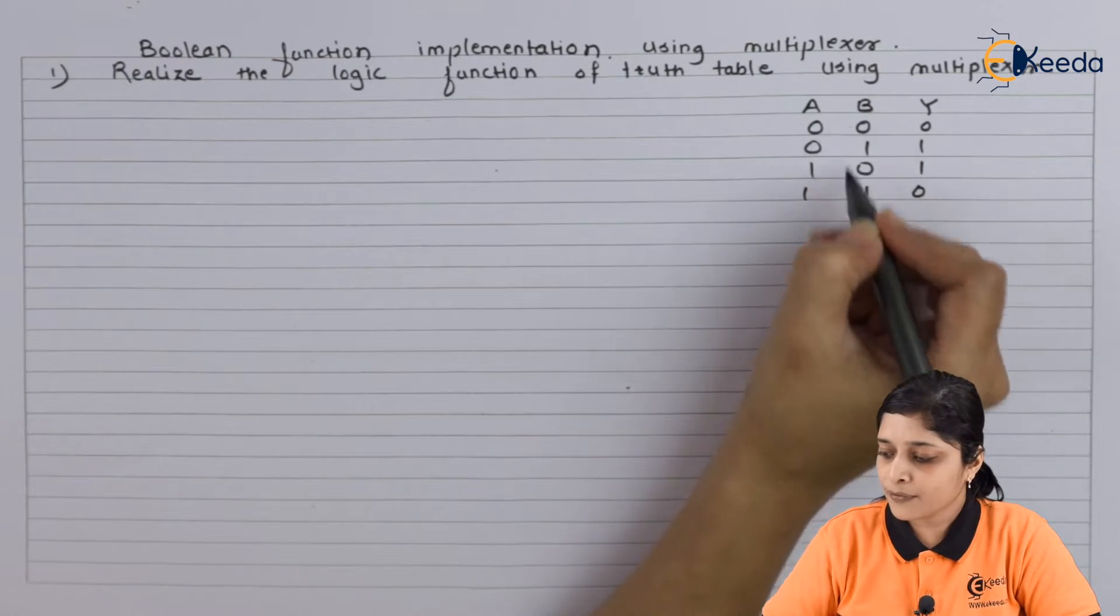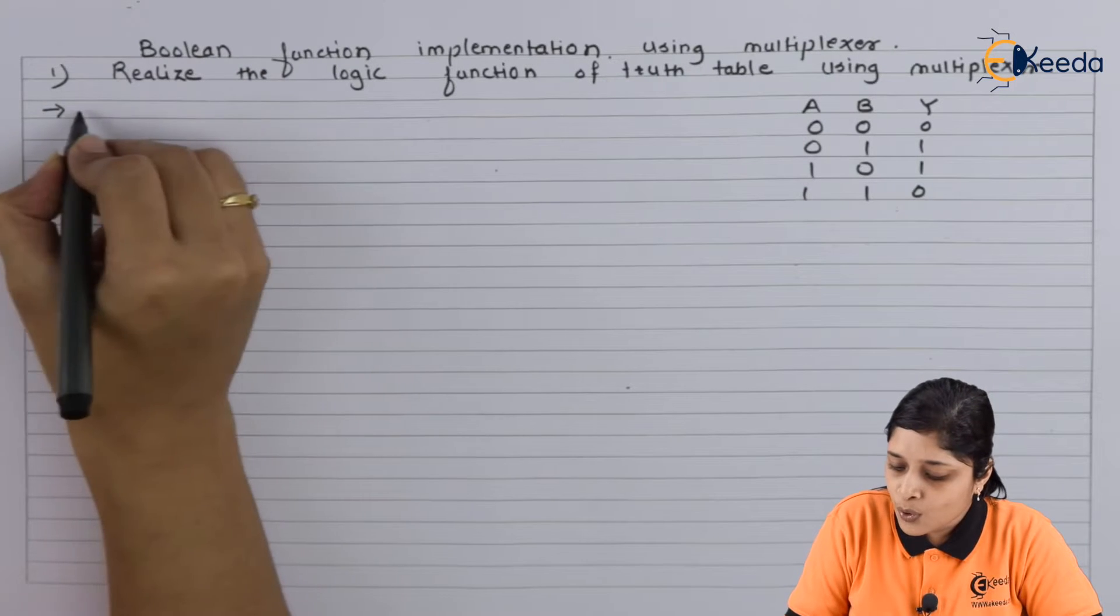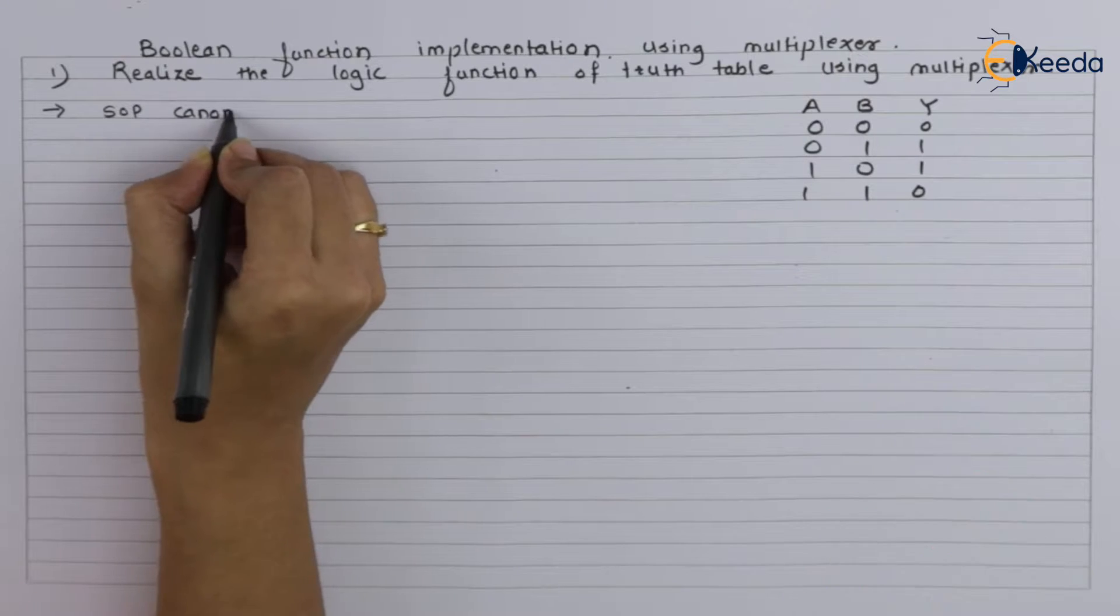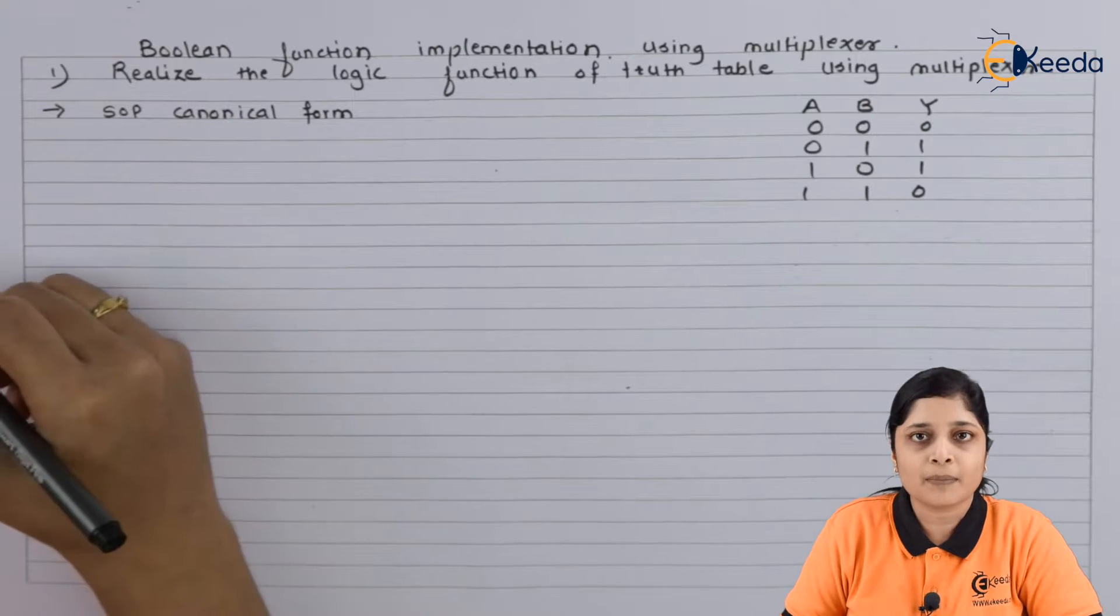You have truth table given. First step is to obtain the SOP canonical form from truth table.